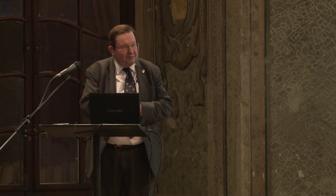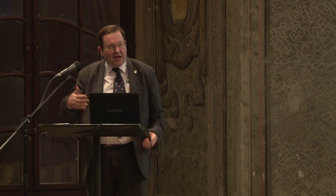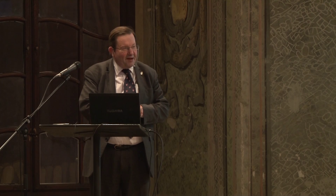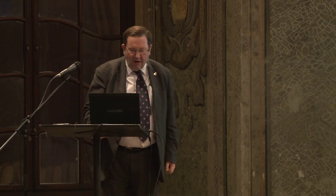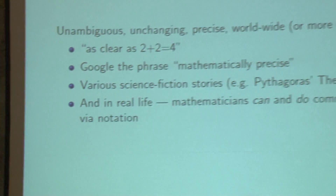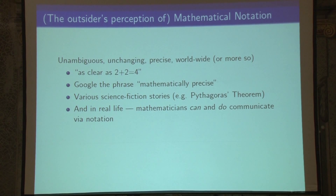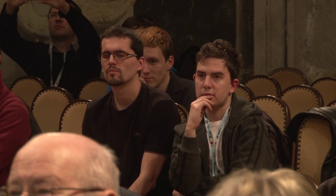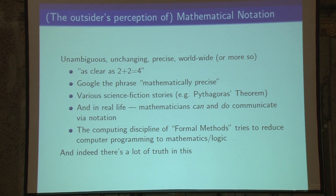In many languages people say it's as obvious as 2 plus 2 equals 4. If you Google the phrase 'mathematically precise', you will find it used in all sorts of contexts, not just in mathematics. There are science fiction stories where people convince aliens they are intelligent by drawing Pythagoras' theorem. And in real life, two mathematicians who speak no common language can sit down with a piece of paper and discuss mathematics. There is an entire computing discipline of formal mathematics which tries to reduce computer programming to mathematics and logic. So there is quite a lot of truth in the outsider's perception — but not 100%.